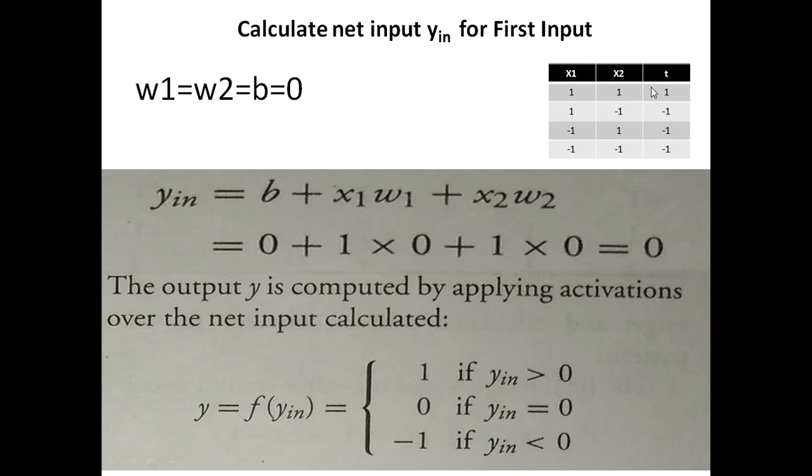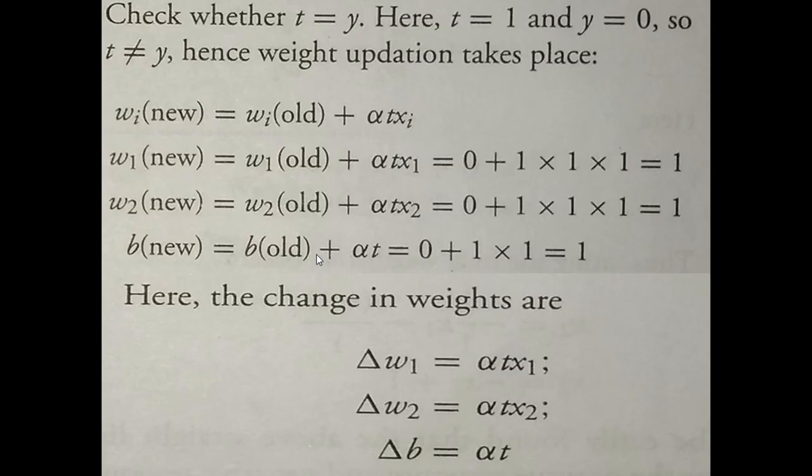If we compare this output with target, our target is one and the output is zero. Both are not equal, which means we are not achieving our target. Our aim is to achieve the target. So if we are not achieving the target, we will update these weights: w1, w2 and bias. We need to change or update them.